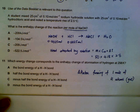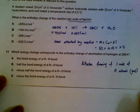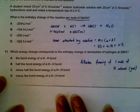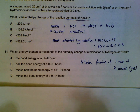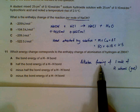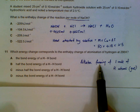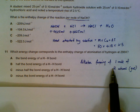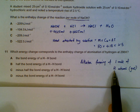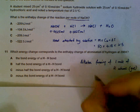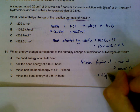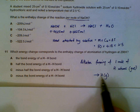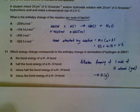Number 11: which energy change corresponds to the enthalpy of atomization of hydrogen? By definition, atomization of hydrogen is the energy used to form one mole of hydrogen atoms in gaseous form. In other words, we need to have one mole of gaseous hydrogen atoms on the right side of the equation.